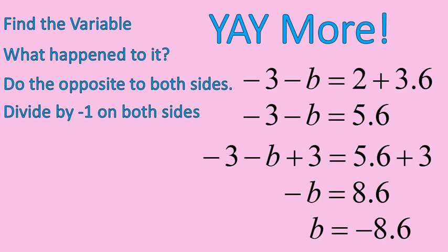So negative B is equal to 8.6. I need to switch the sign on both of them. Divide both sides by negative 1. And that switches the signs on both the variable and the number.